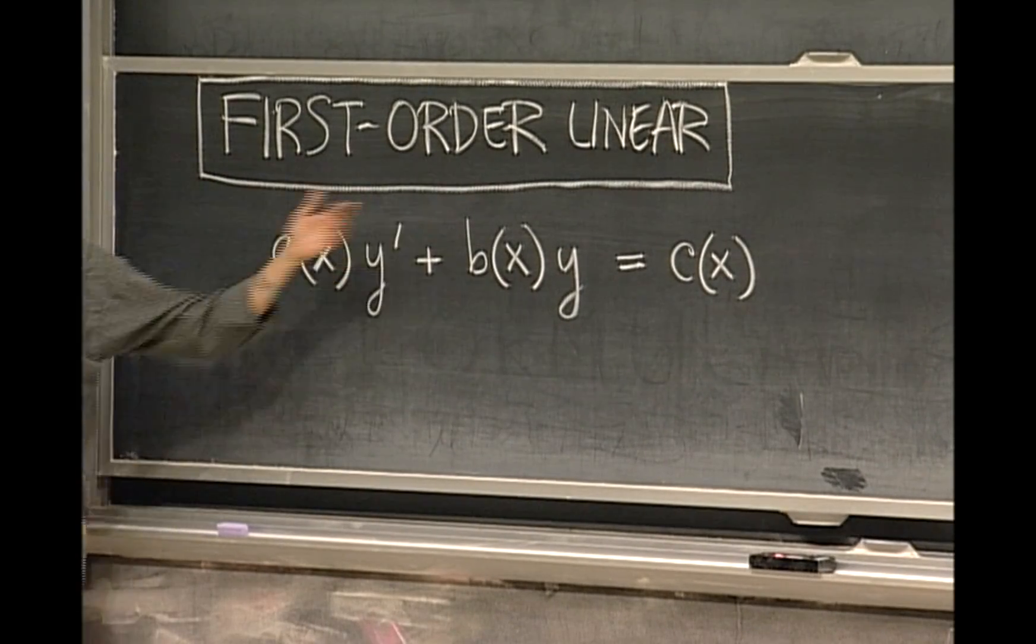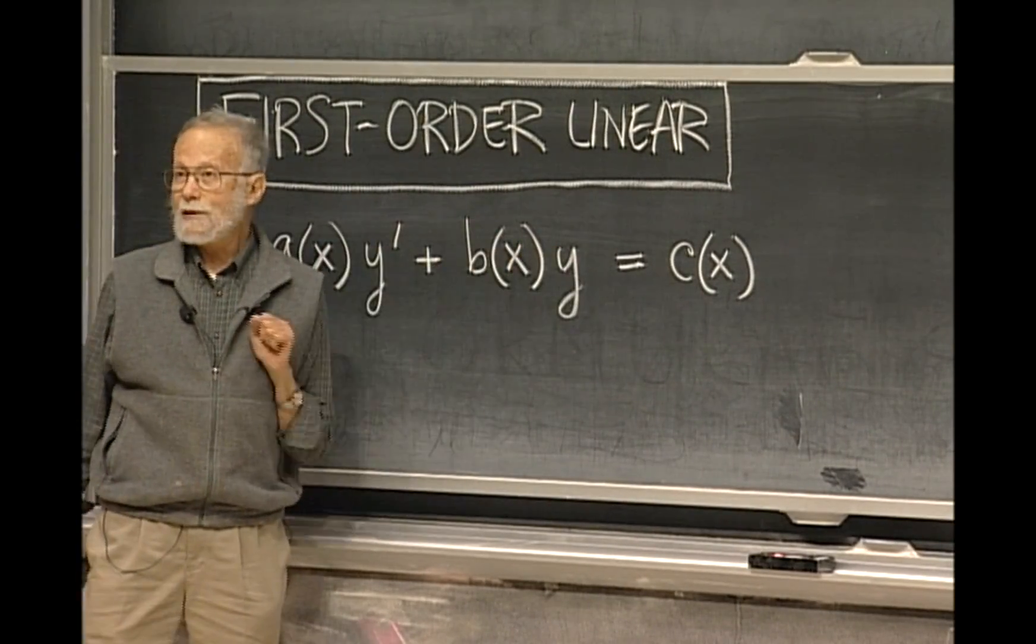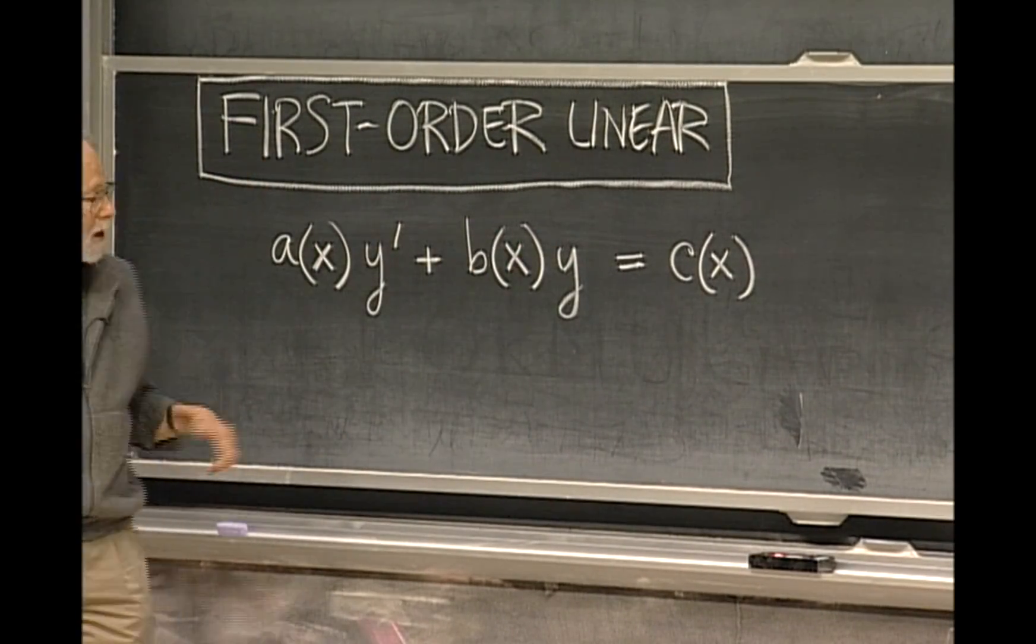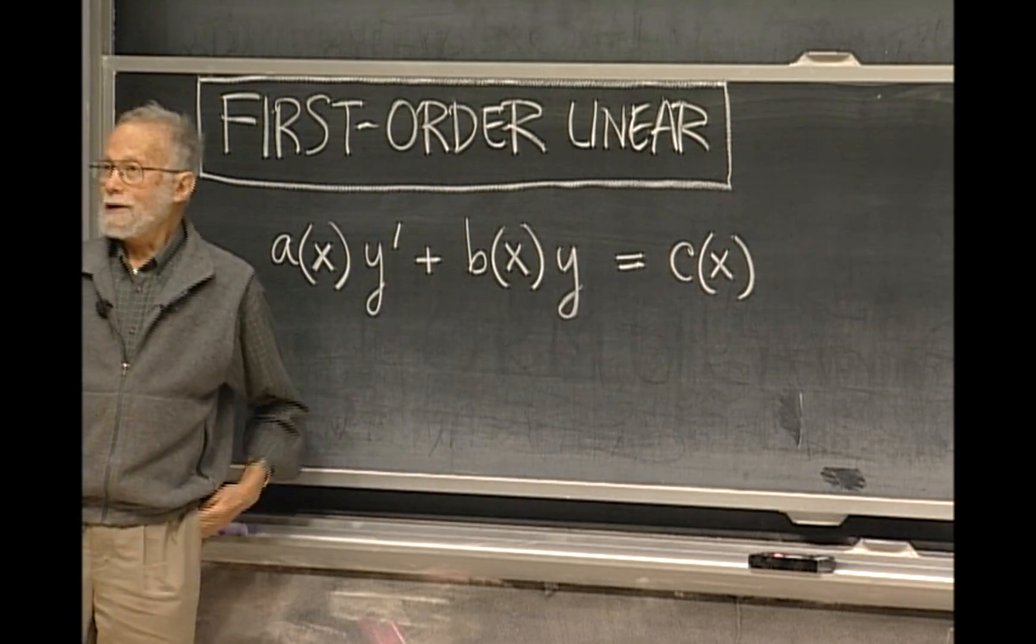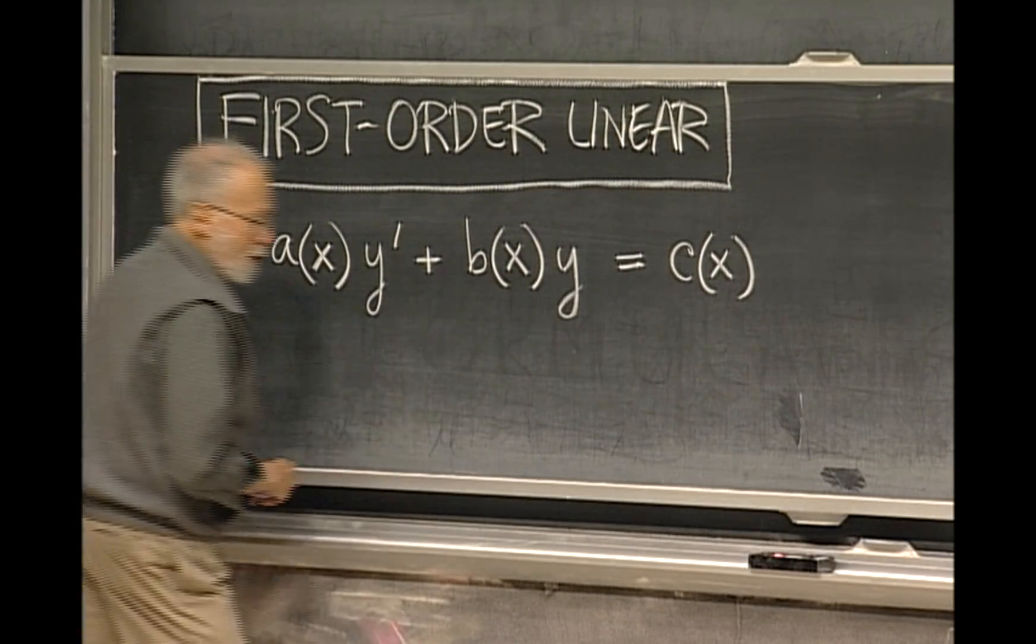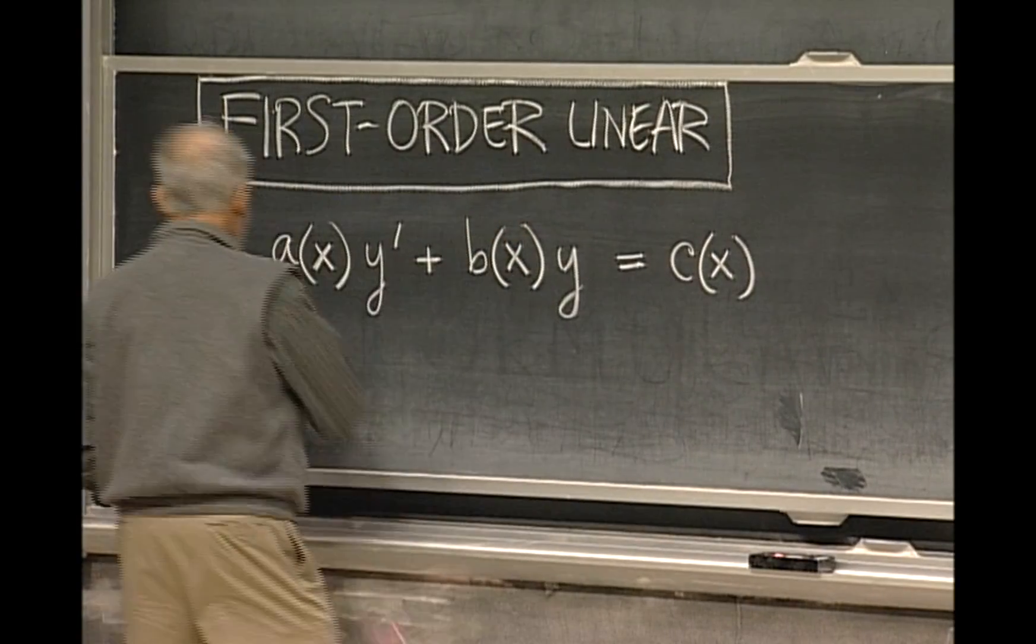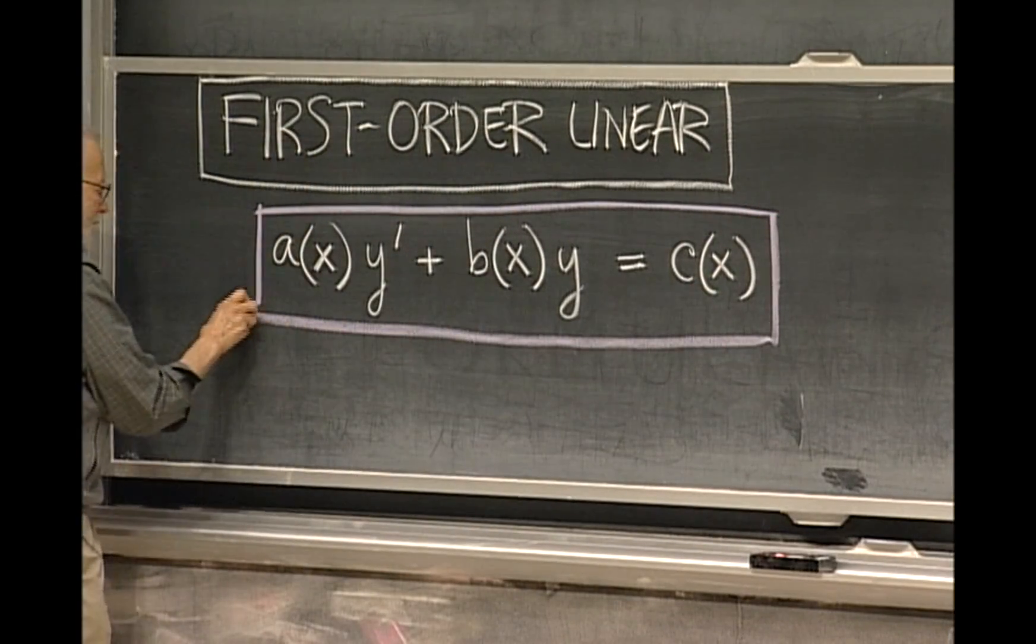Obviously, x doesn't have the same status here that y does. Y is extremely limited in how it can appear in the equation, but x can be pretty much arbitrary in those places. So that's the equation we're talking about, and I'll put it up. This is the first version of it.